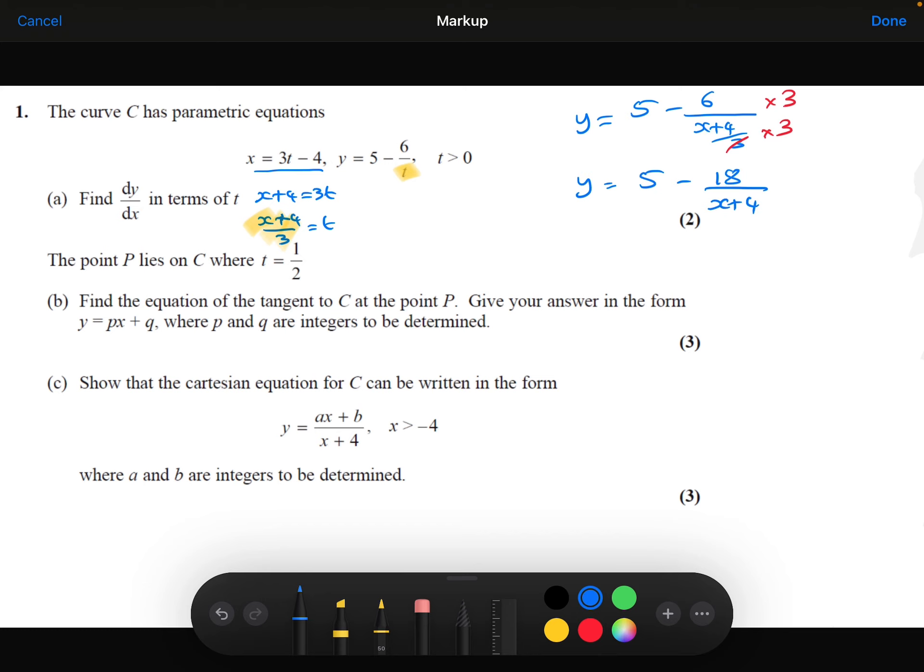And we want a single fraction rather than two separate terms. So to get a common denominator, let me times the 5 by x plus 4 so that we have a common denominator.